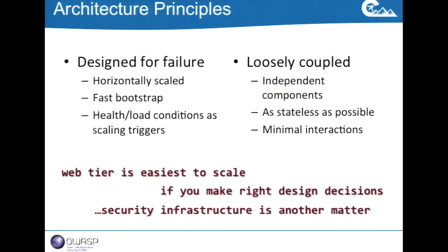The most complex principle is loose coupling — separating functionality so that components interact as little as possible and are as independent as possible. This is where things get complex with vendors: a WAF that was never designed for auto scaling runs into trouble. You have to choose components in your security stack that can be auto-scaled, and the key principle for that is loose coupling. You're looking for infrastructure that can be deployed with APIs and components essentially designed as black boxes that talk to each other as little as possible.